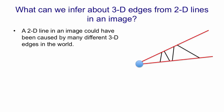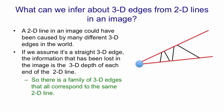That's because we've lost the information about how far away the ends of the line are along that line of sight. We know the end is somewhere along the line of sight, but we don't know the depth. So if we assume that a straight 3D edge in the world is the cause of a straight 2D line in the image, then we've lost two degrees of freedom of that 3D edge, its depth at each end. So there's a whole family of 3D edges that all correspond to the same 2D line.